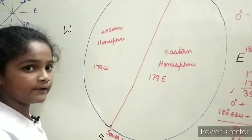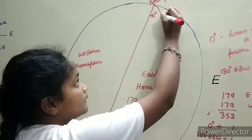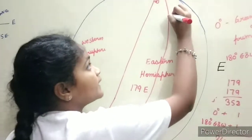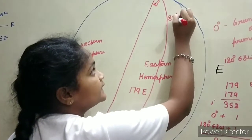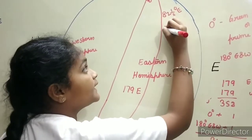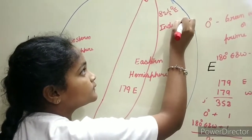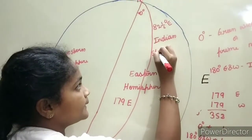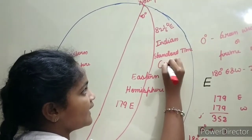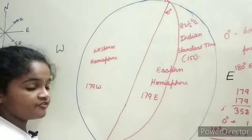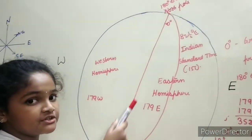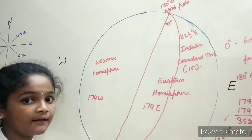Another important longitude: 82 and a half degrees east longitude is called Indian Standard Time, or IST. Every country has its standard time and it depends on Greenwich Mean Time.